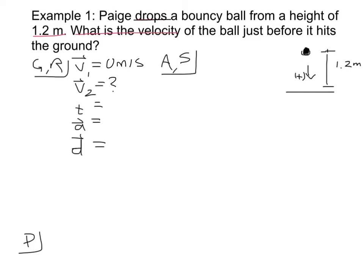T, I don't know right now, and acceleration is acceleration due to gravity. And we said downwards is positive, so our 9.81 is positive. And the distance also is positive, because it's down, is 1.2 meters. So it looks like T is the one I don't need. So I want the equation that has no T in it. So that is V2 squared equals V1 squared plus 2AD.